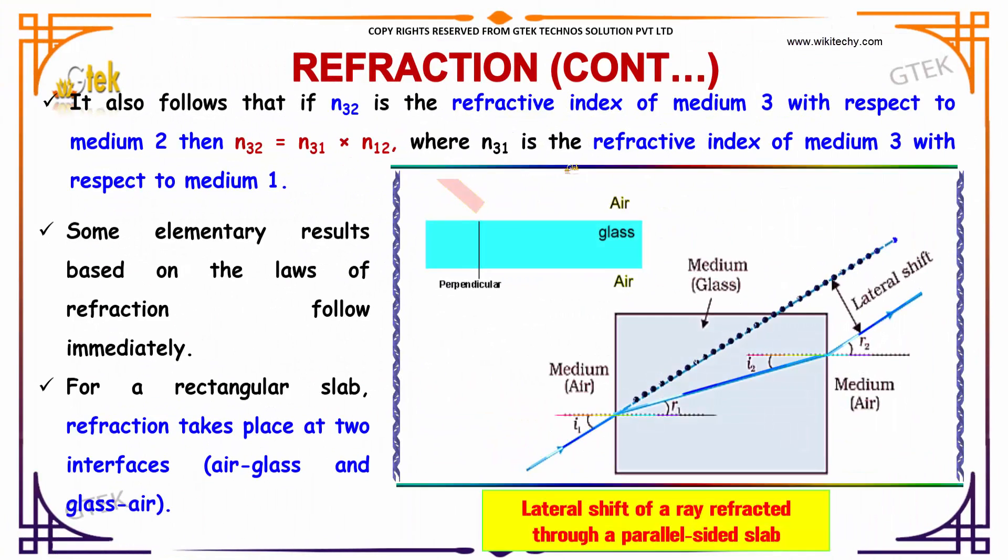It also follows that if n32 is the refractive index of medium 3 with respect to medium 2, then n32 is equal to n31 into n12, where n31 is the refractive index of medium 3 with respect to medium 1.